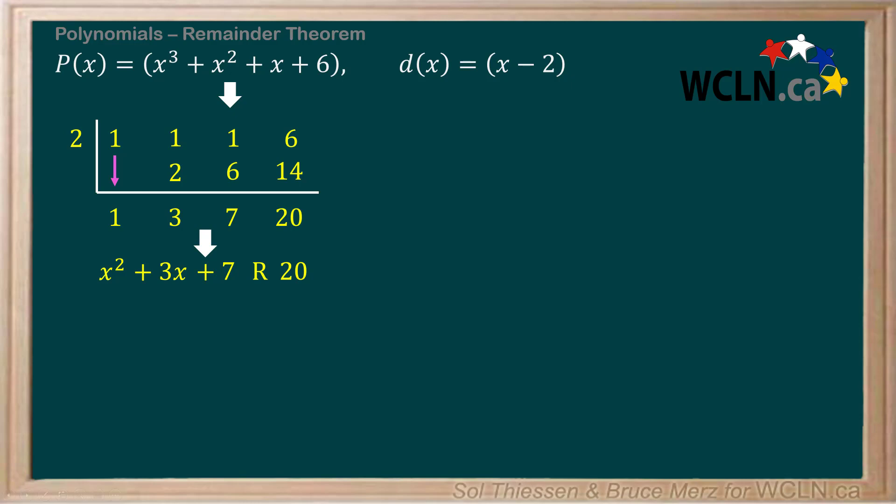Let's write the division statement, which says that the dividend polynomial, P(x), is equal to the quotient q(x) times the divisor d(x) plus the remainder r(x).